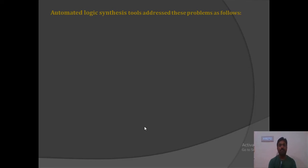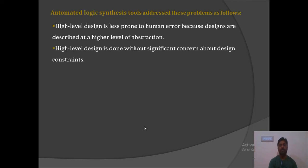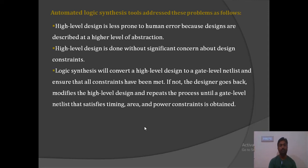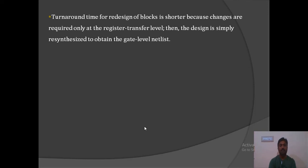If we adopt an automated logic synthesis tool, it addresses all these problems. High level design is less prone to human error, and is done without significant concern about design constraints. Logic synthesis converts the high level design to a gate level netlist and ensures all constraints are met. If not, the designer goes back and modifies the behavioral level until the gate level netlist satisfies timing, area, and power constraints. Conversion is very fast, and turnaround time for redesign is much shorter since changes are required only at the RTL level.